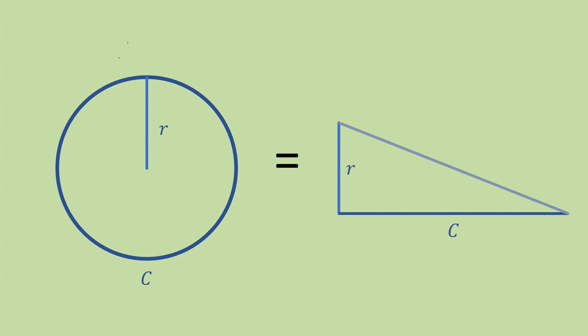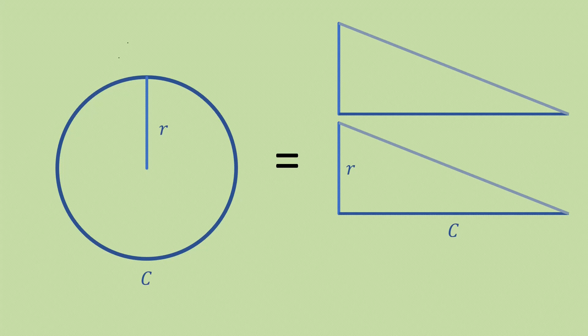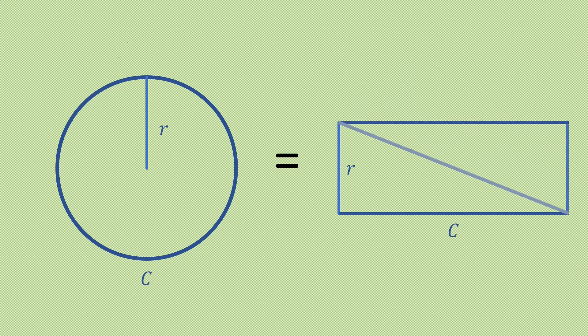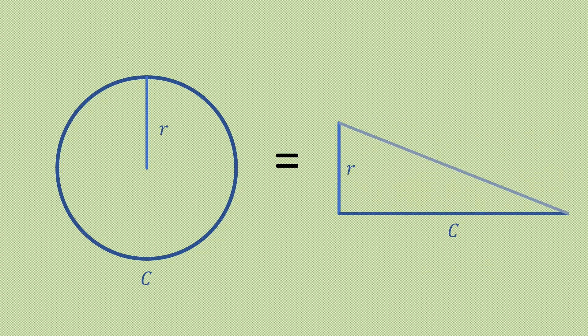Before we get to that, let's calculate the area of a right triangle. We can do this by making an exact copy of the triangle and arranging it in a way that creates a rectangle. The area of a rectangle is simply the length multiplied by the width. Therefore, the area of a triangle is half the base times the height. In this case, the base is c and the height is r.